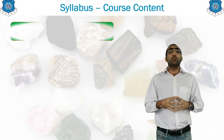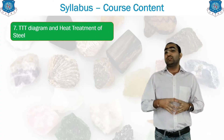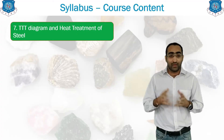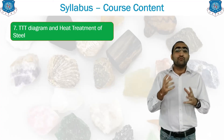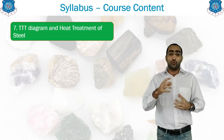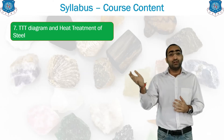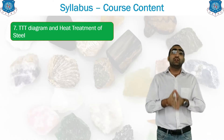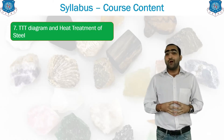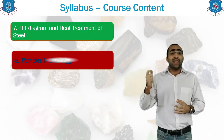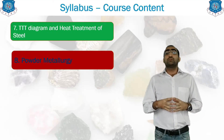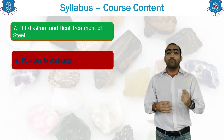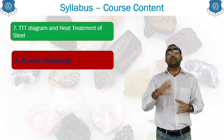The seventh unit is the TTT diagram. There are certain disadvantages of the iron-carbon diagram that have been improved by the TTT, that is the Time Temperature Transformation diagram. Steel always requires heat treatment processes for improvement of its properties, and how we can increase those properties is included in unit number seven — TTT diagram and heat treatment of steel. The eighth unit is powder metallurgy, which covers the use of metal in powder form. Powder metallurgy has certain advantages for properties like strength, and that is covered in this unit.